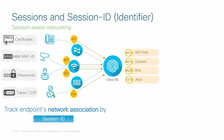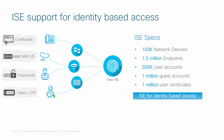The moment an endpoint hits the network, the network devices generate a session ID and share it with ICE. ICE centrally knows what all the endpoints in the network are and where they are located. ICE can talk to up to 100,000 network devices, can support up to 1.5 million endpoints, 300,000 internal user accounts, 1 million guest user accounts, and 1 million user certificates that can be issued from ICE.